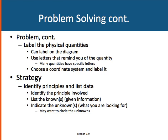Once we have that drawn, we want to label all the physical quantities. We can label that right on the diagram. We're going to use letters that remind us of the quantity. For example, for velocity, we would label it v. For mass, we would label it m. A lot of the quantities that we're going to talk about have specific letters that we'll always use for them. And of course, once we have a figure, we want to draw a coordinate system and label it so that we know very quickly when we're looking at it how it relates to our coordinate system.